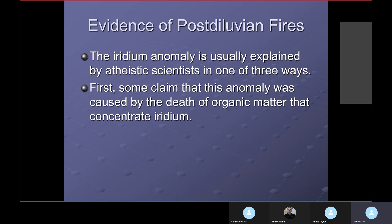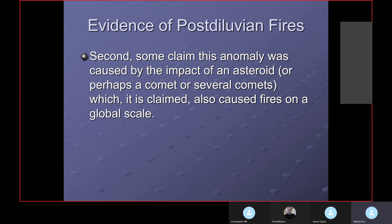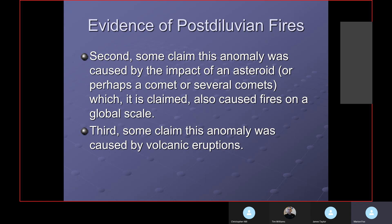First, some claim that the anomaly was caused by the death of organic matter that concentrated iridium. The problem with this is there's not iridium in the lower layers of rock in large amounts. Some claim this anomaly was caused by the impact of an asteroid or perhaps a comet or several comets, which is going to also cause fires on the global scale. That may be closer to the truth as it fits my model better. Third, some claim this anomaly was caused by volcanic eruptions. We know we have two kinds of volcanoes that erupt and we'll look at those.